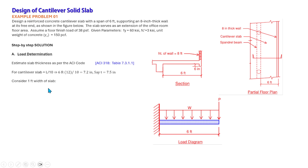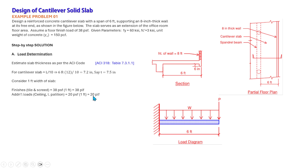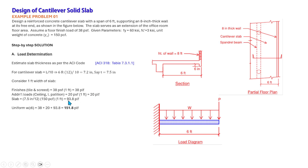Considering a one-foot width of slab: the floor finish load is 38 PSF, which consists of tiles and screed. The additional load due to ceiling or light partitions is estimated at 20 PSF = 20 PLF. The slab self-weight = (7.5/12) × 150 PCF = 93.8 PLF. So the total uniform dead load = 38 + 20 + 93.8 = 151.8 PLF.